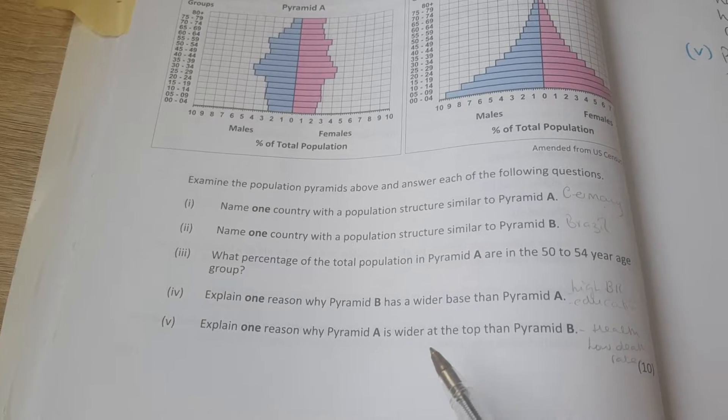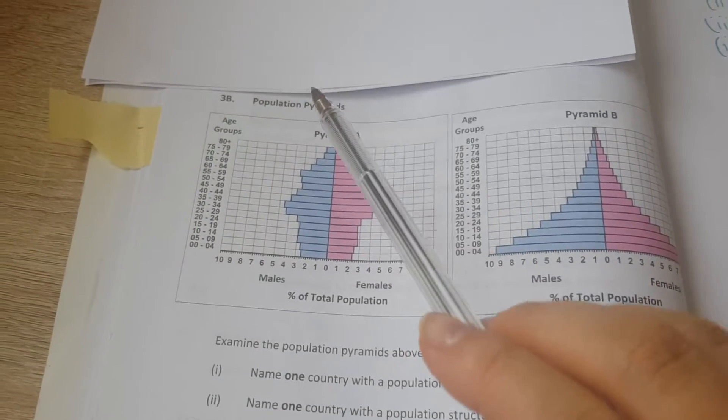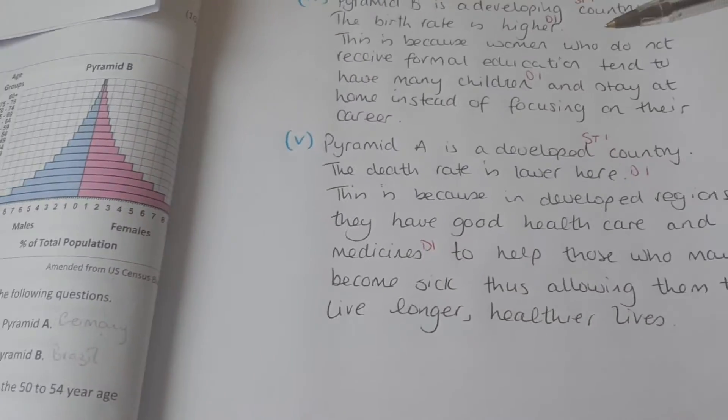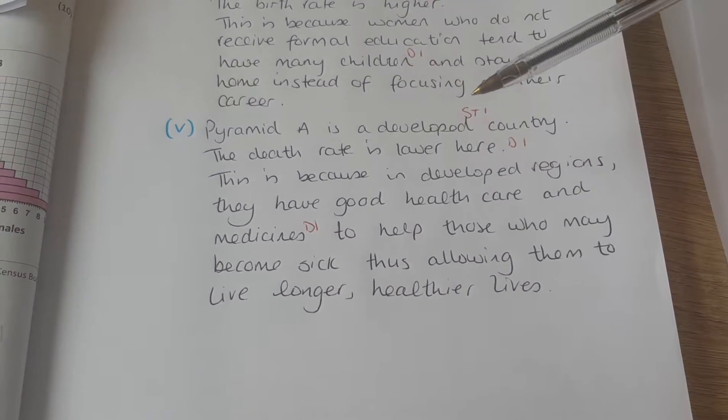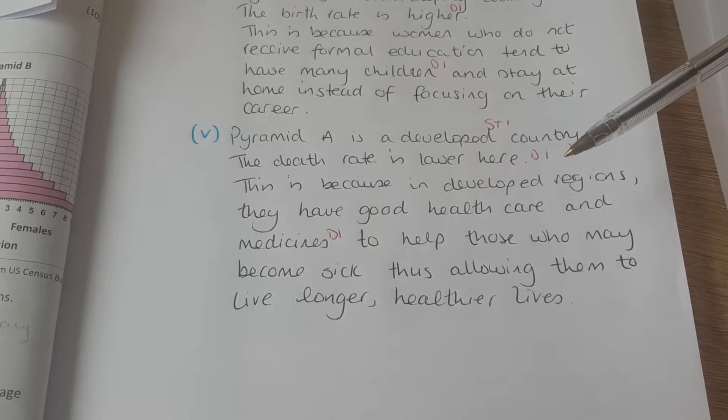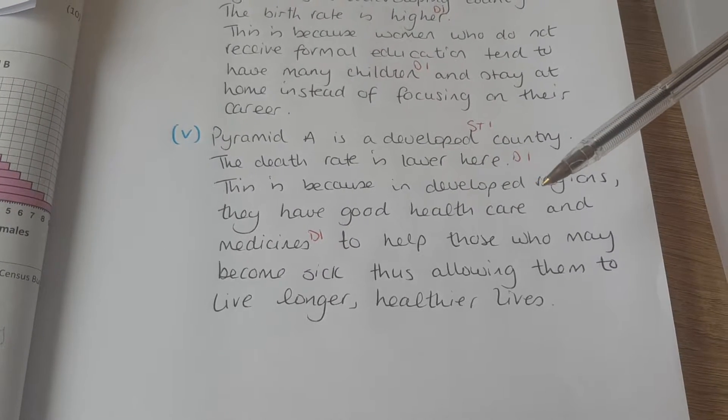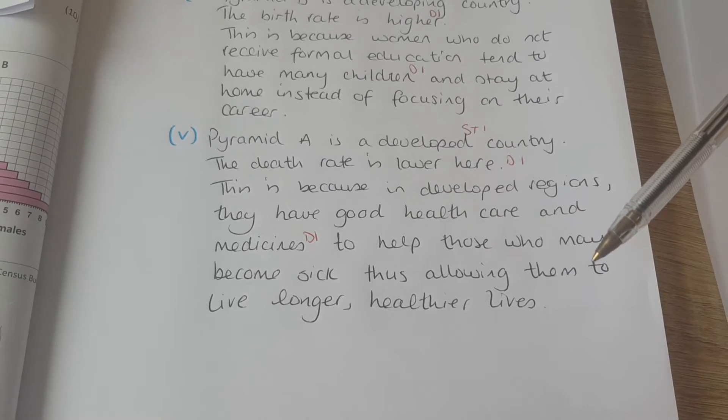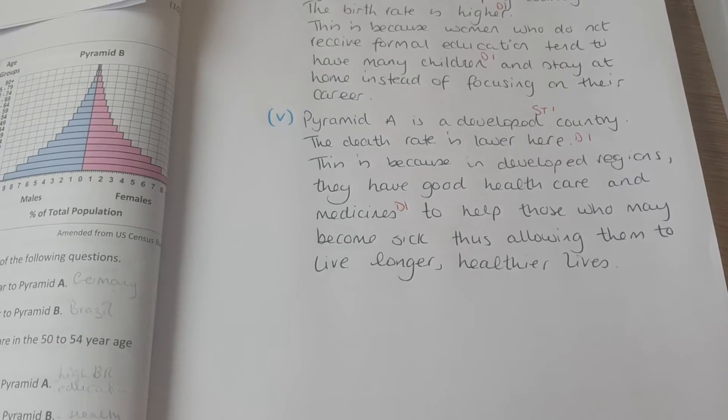Explain one reason why pyramid A is wider at the top than pyramid B. So wider at the top than pyramid B. Let's look here. Pyramid A is a developed country. The death rate is lower here. This is because in developed regions they have good health care and medicines to help those who may become sick, thus allowing them to live longer, healthier lives.